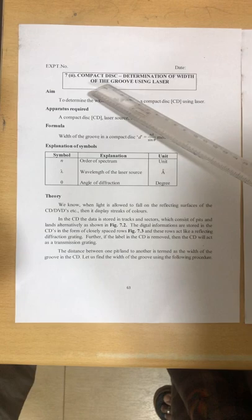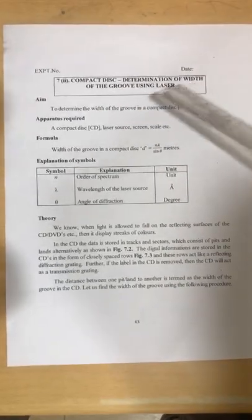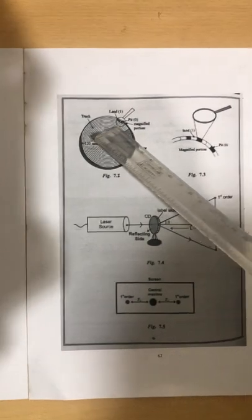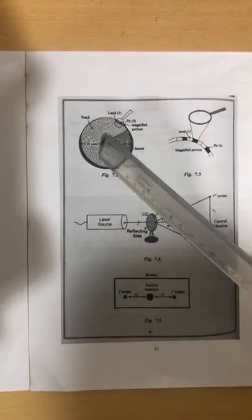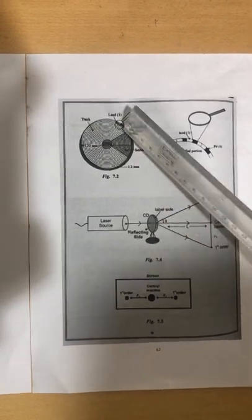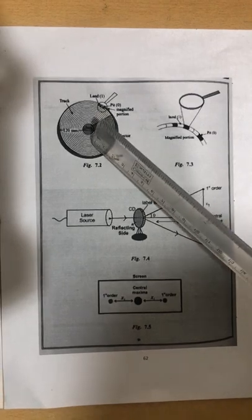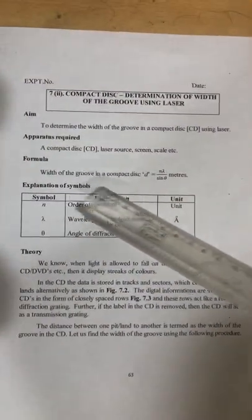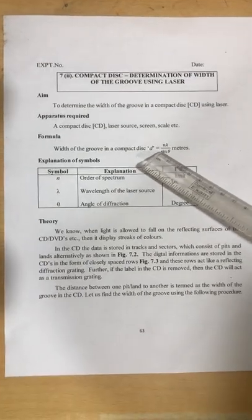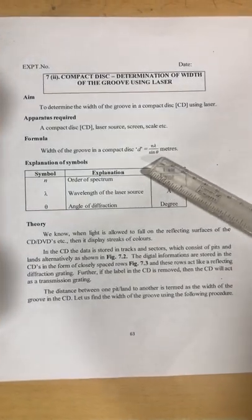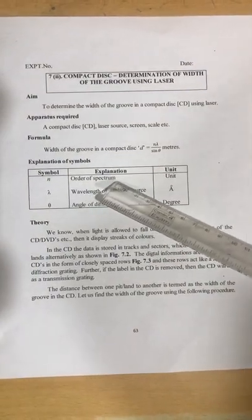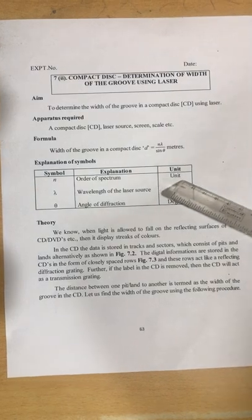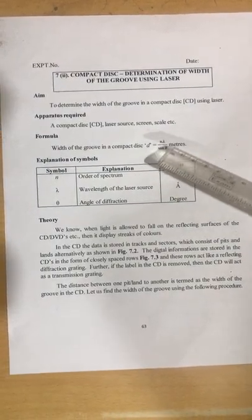In this experiment we are going to determine the width of the groove in a compact disc using laser. The grooves on the CD are the circular tracks where data is recorded. The formula for the width of the groove is: d = nλ / sinθ, where n is the order of spectrum. In this experiment, only the first order image can be seen, so n = 1. Lambda is the wavelength of the laser we are using.